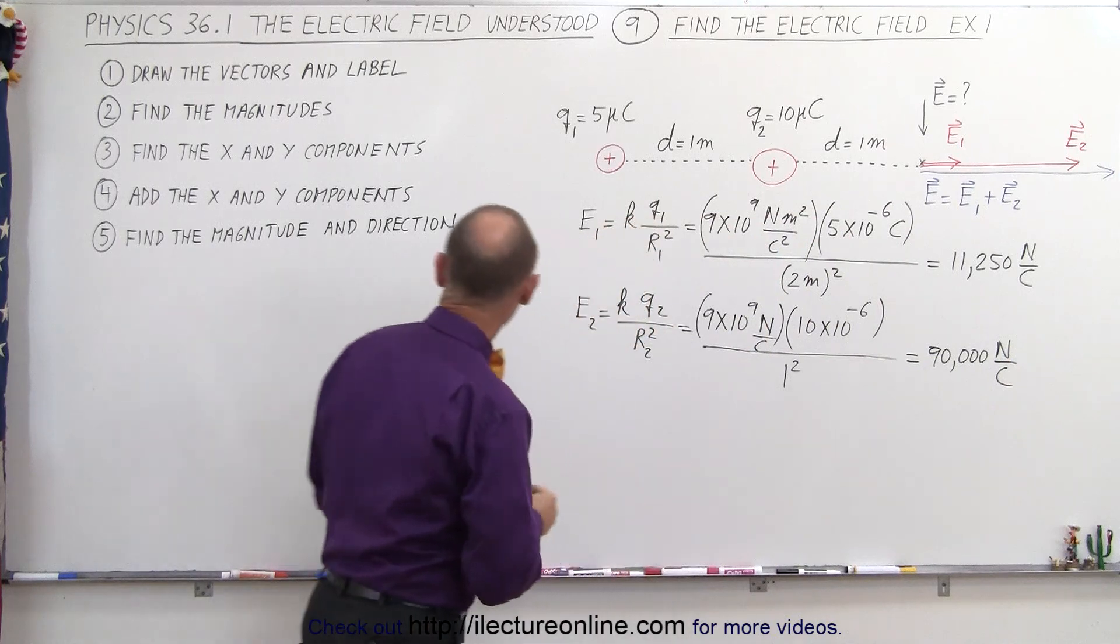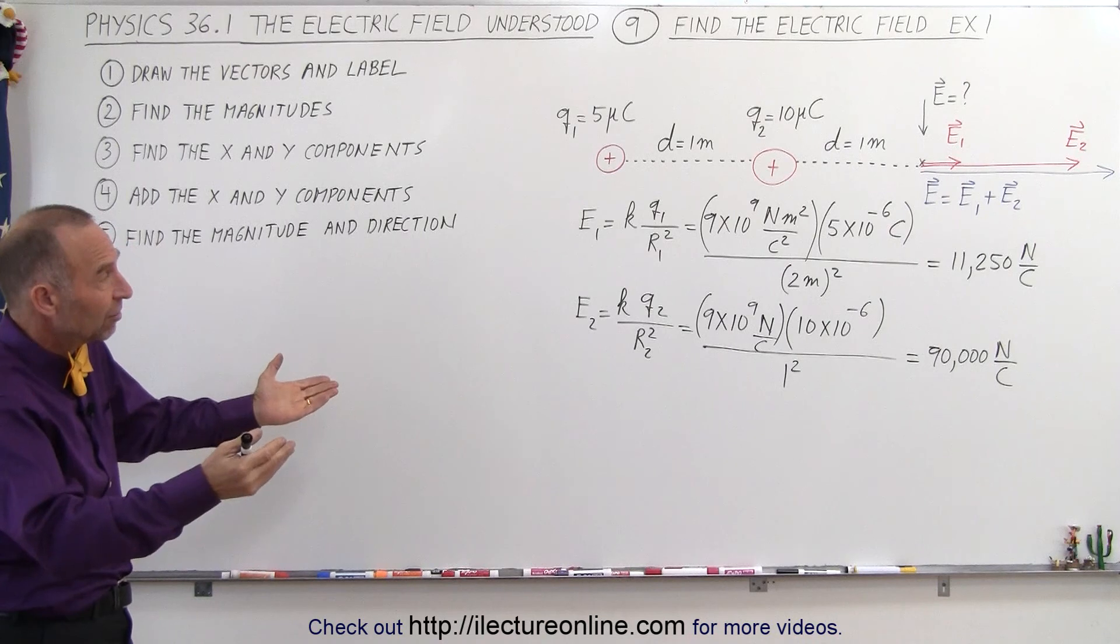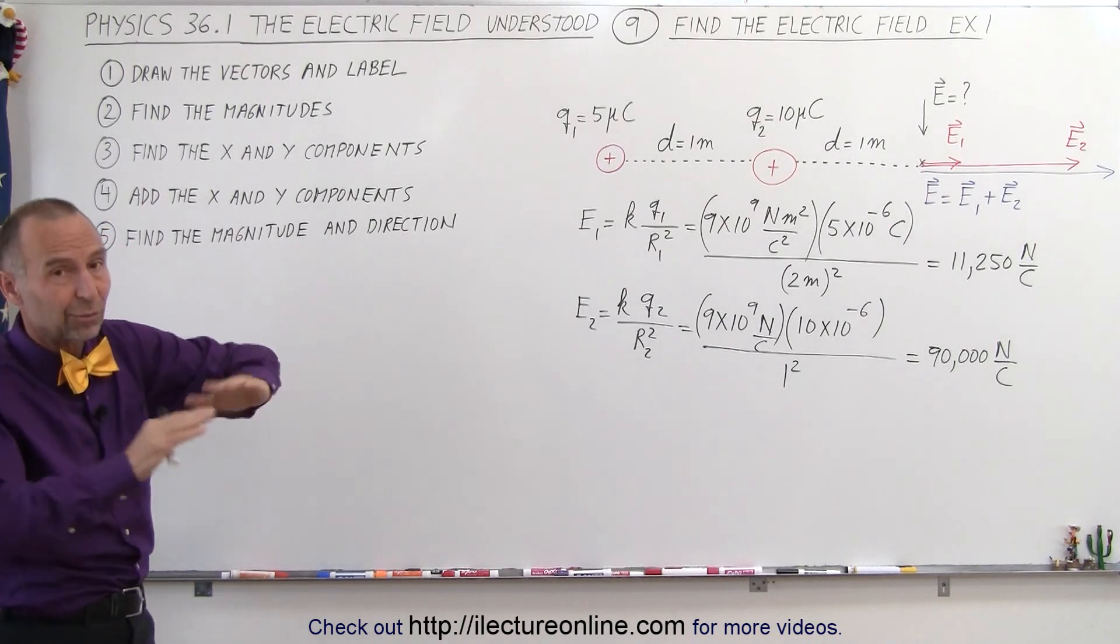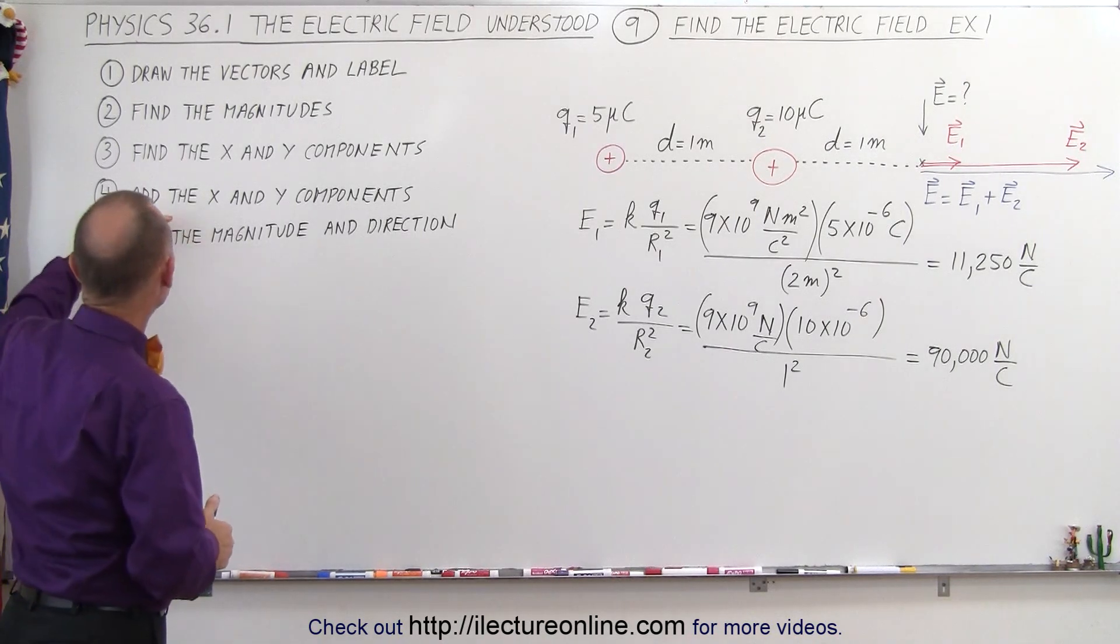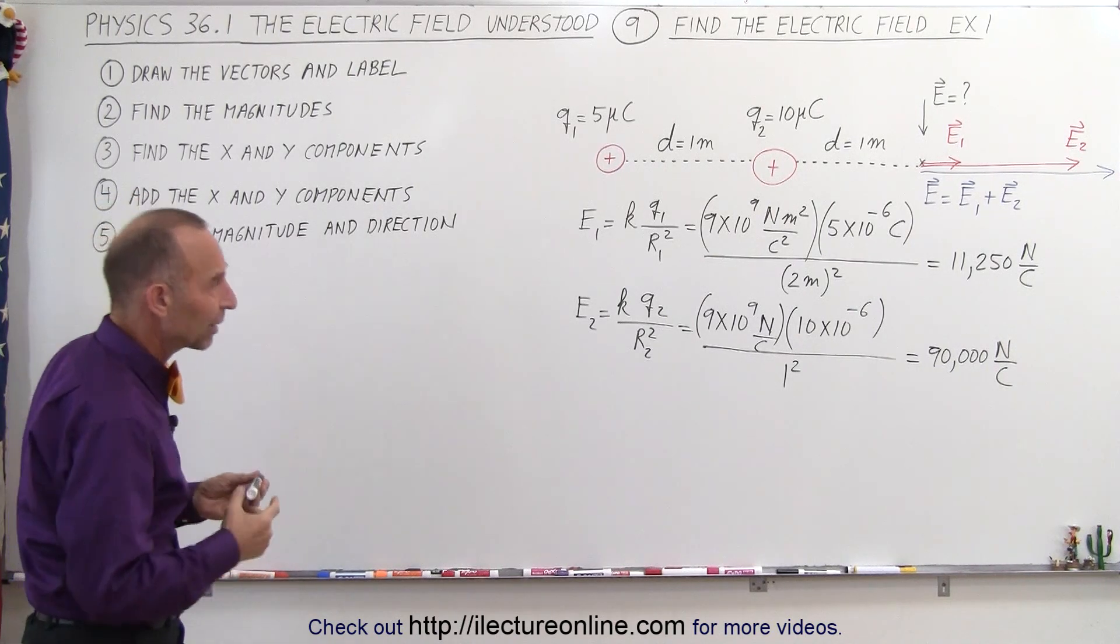Okay, so now we've done step two, we found the magnitudes. Now we need to find the x and y components, but in this case since everything is pointing in the x direction we can skip that step. Next step is add the x and y components together, so now we can actually do the vector sum.